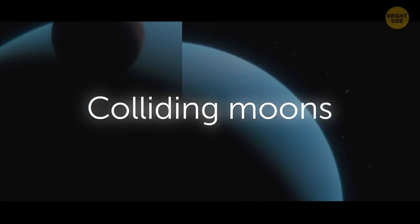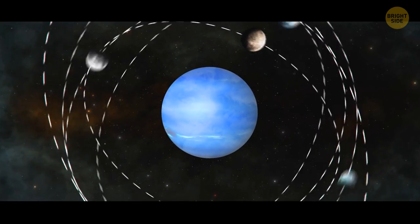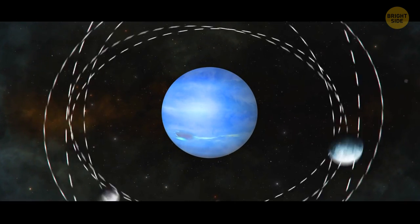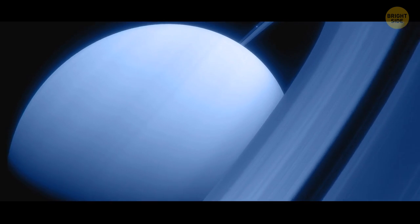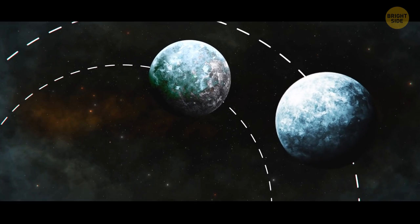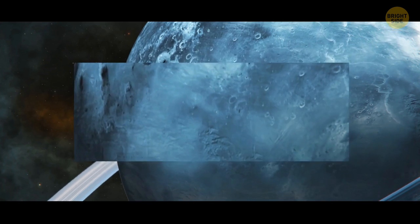Colliding moons. The moons of Uranus are part of a highly unstable system. Some of them have orbits that cross paths. Uranus already has two rings of debris from past collisions of its natural satellites. Desdemona and Cressida will crash into each other in the next million years and produce new rings.